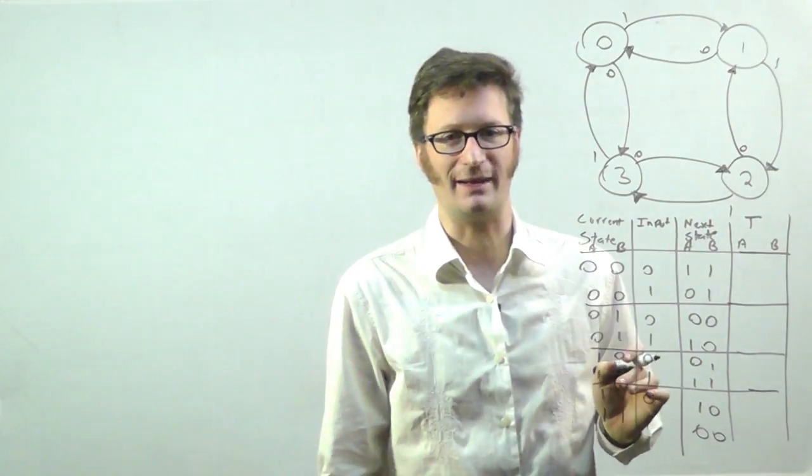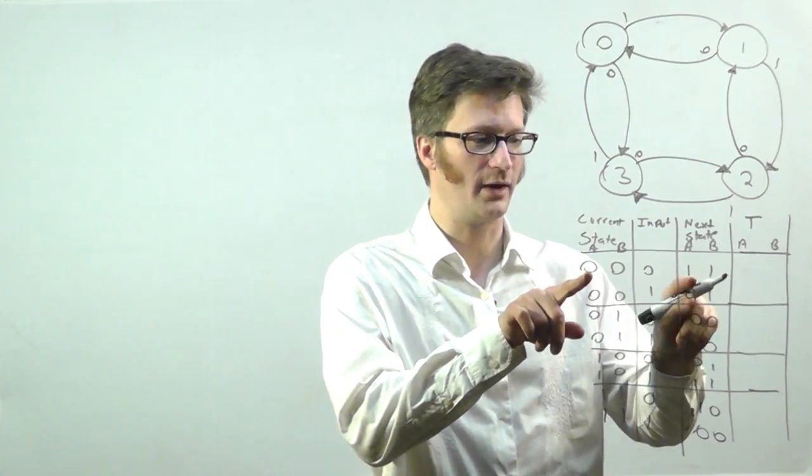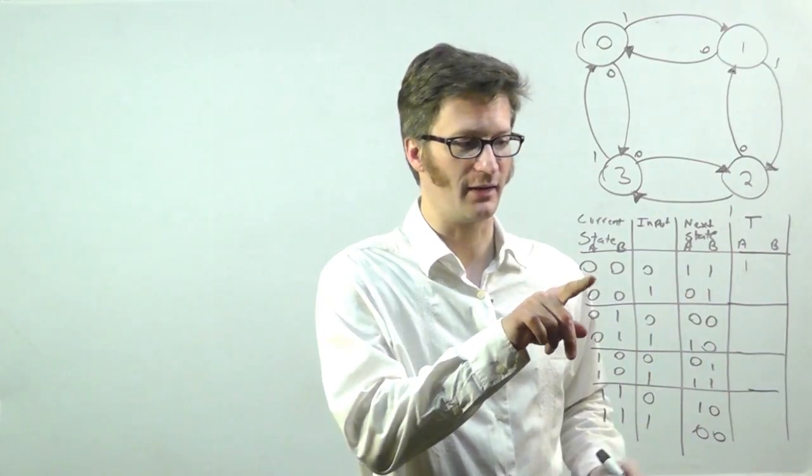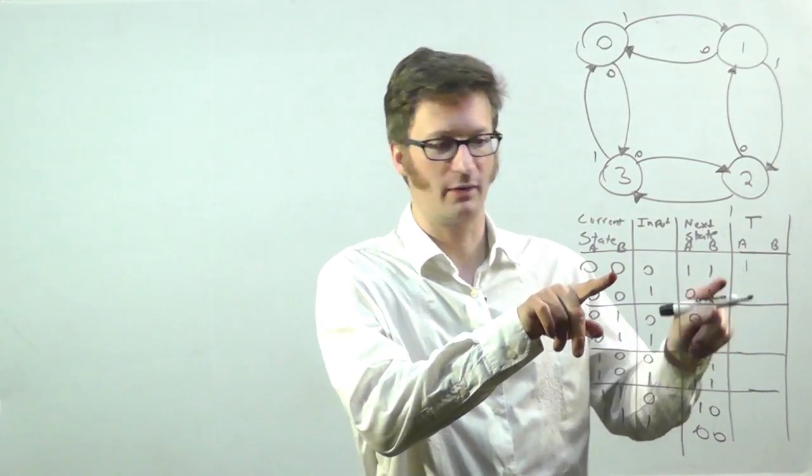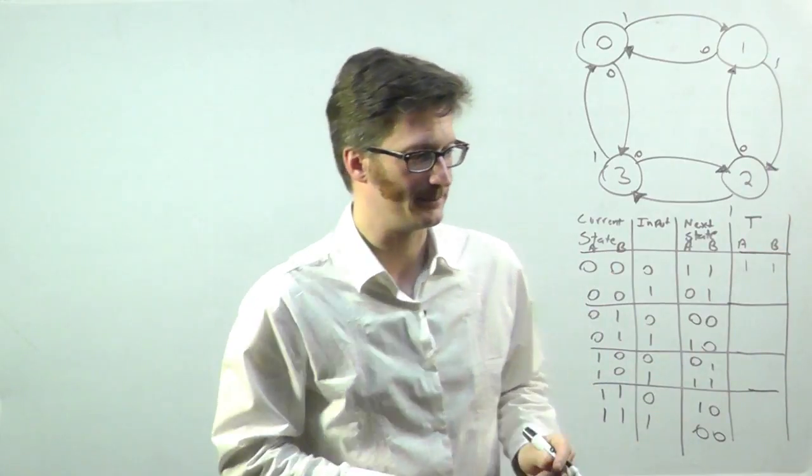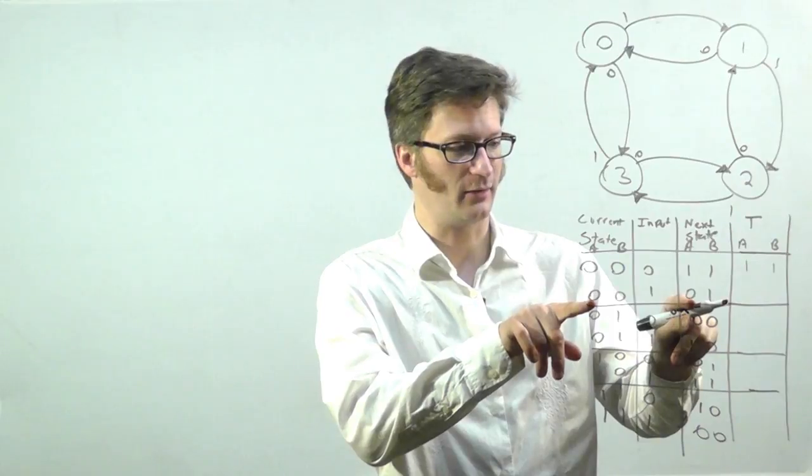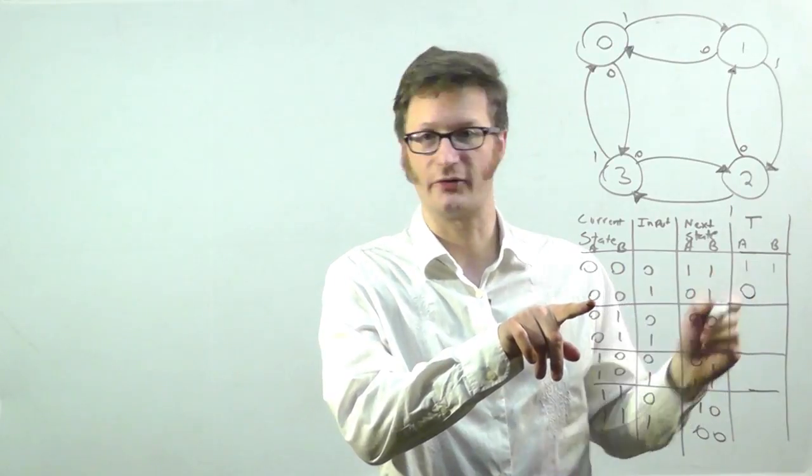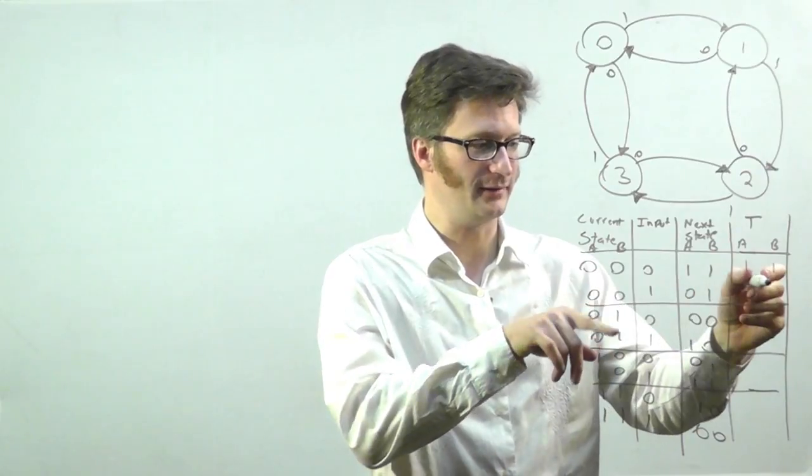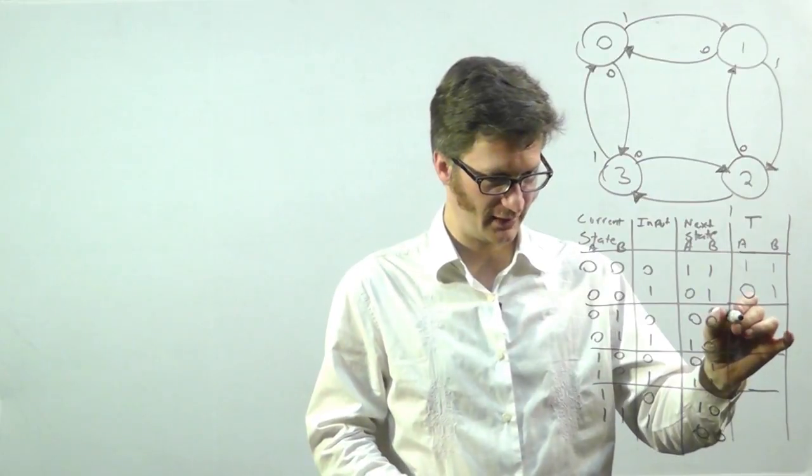So if I have a zero here and a one here, it needs to toggle, so I'll put a one there. Here I have a zero, here I have a one, that needs to toggle, so I'll put a one. Here I have a zero and a zero, it doesn't need to toggle, so I'll put a zero. And here a zero and a one, it does need to toggle, and I'll just go through the table like that somewhat quickly.